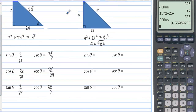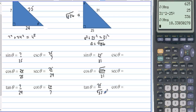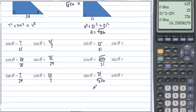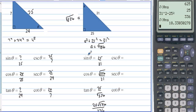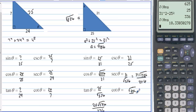So that side is the square root of 336. Sine is opposite over hypotenuse, which is 25 over 31. Cosine is adjacent over hypotenuse, which is square root of 336 over 31. Tangent is opposite over adjacent, and if we rationalize the denominator, we get 25 square root of 336 over 336. Cosecant is 31 over 25. Secant is 31 over square root of 336, which rationalizes to 31 square root of 336 over 336. And cotangent is the square root of 336 over 25.